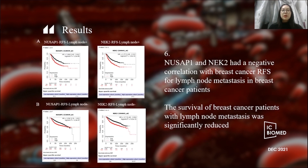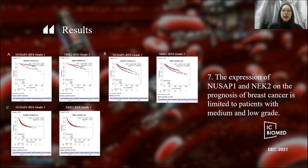Finally, we analyze the prognosis of NASAP1 and NASAP2 in relation to lymph node metastasis in breast cancer. The expression of NASAP1 and NASAP2 was associated with survival in breast cancer patients with or without lymph node metastasis, but the survival of breast cancer patients with lymph node metastasis was significantly lower. The effect of NASAP1 and NASAP2 on prognosis was limited to patients with low and intermediate grades, and survival became shorter with disease progression.